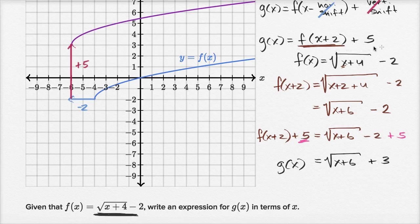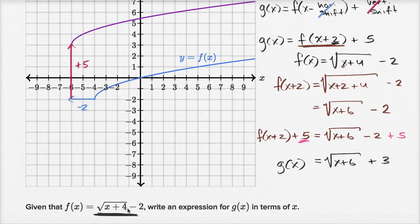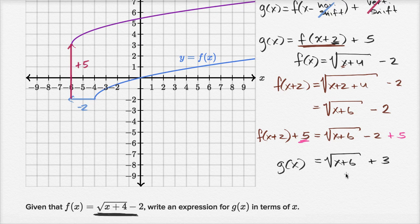Just as a reminder — first I expressed g of x in terms of f of x: shifting two to the left and five up. It's a little counterintuitive that plus two makes it a shift two to the left — if it were minus two, it would shift right. But it's good to try out some x values to see why that makes sense. Then we used the definition of f of x, substituted x plus two for x, and added five to get g of x. And then we are all done.